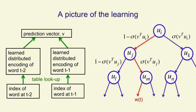That prediction vector then gets compared with the vectors that have been learned for all the nodes in the tree on the path to the correct next word.